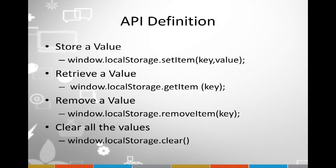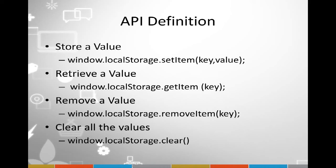To remove a value: localStorage.removeItem() takes a key as argument and removes that key-value pair from local storage. To clear the whole database: localStorage.clear() clears all data stored by your web application — and only your application, because it's domain-specific.